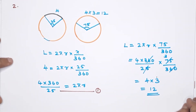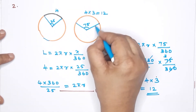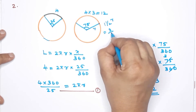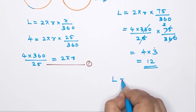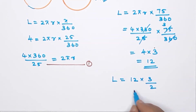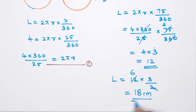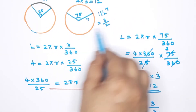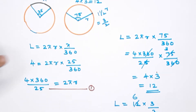Now for the second part of this question: the circle has a radius of one and a half times r, which means the radius is (3/2)r. The arc length for central angle 75 degrees in this larger circle works out to 18 centimeters.